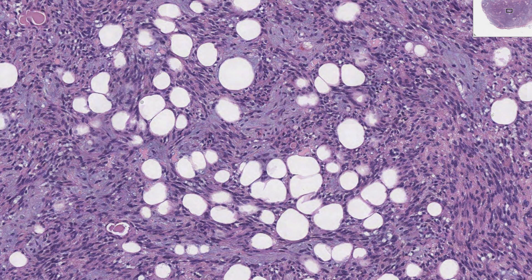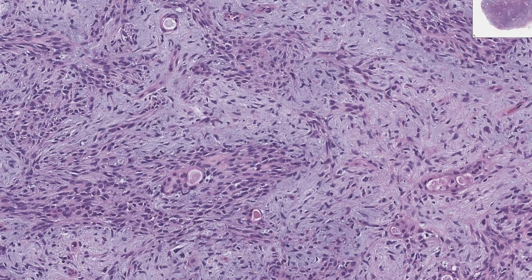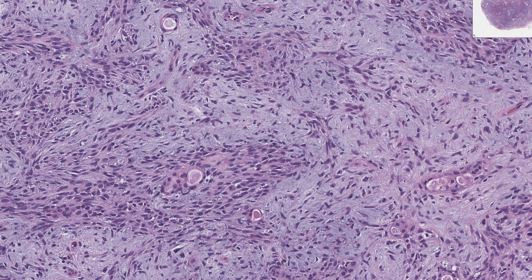Pleomorphic adenomas can get a lot of unusual stroma, like adipose tissue, bone, and cartilage. The myoepithelial cells often have a spindle morphology and appear to emanate off of the epithelial-myoepithelial structures — they peel off those ductal structures. It's the myoepithelial cells that make all the unusual stroma seen in salivary gland tumors: the basement membrane matrix, glycosaminoglycans, and cartilage.